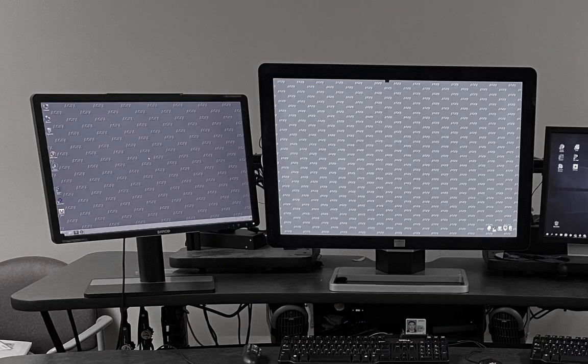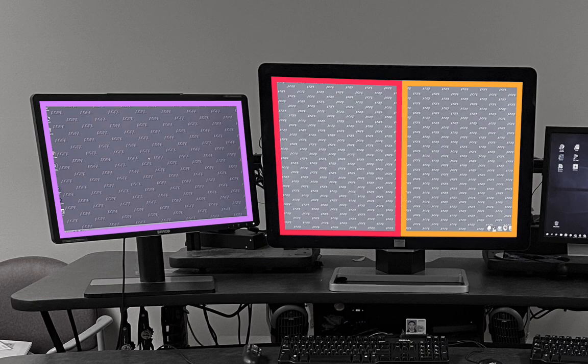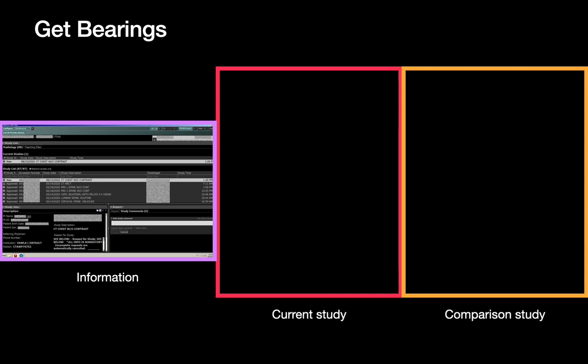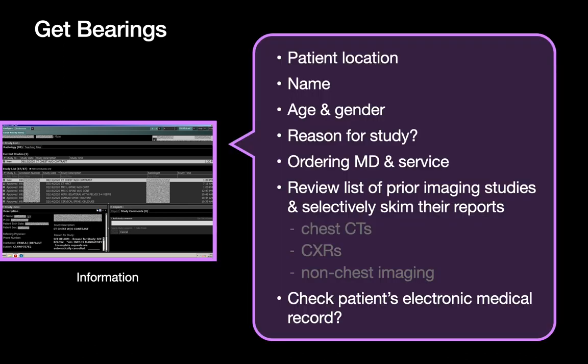Although most modern PACS stations have two large displays, I like to think of them as three display regions: one where patient information appears, one where the images of the current study are displayed, and one where comparison images from the past are displayed. What appears in the information region is mostly text in different windows and panes that help orient me to the study I'm about to read — where the patient is coming from, the patient's name, age, and gender, and if I recognize the patient's name, I may instantly know much more about their story.